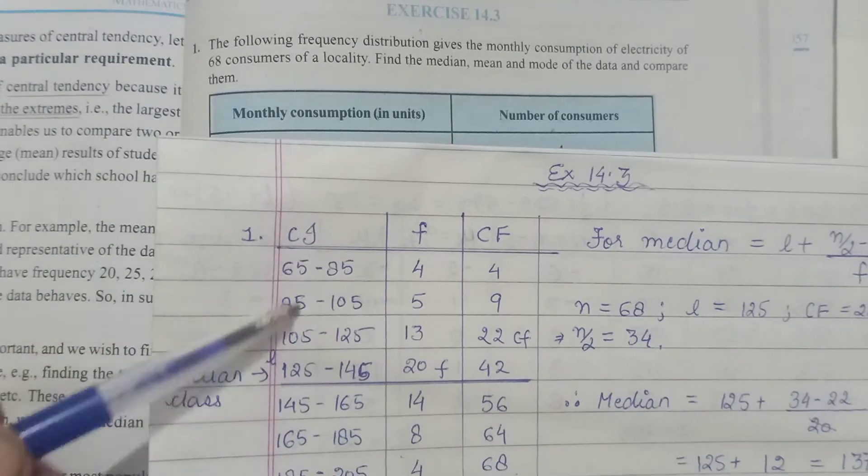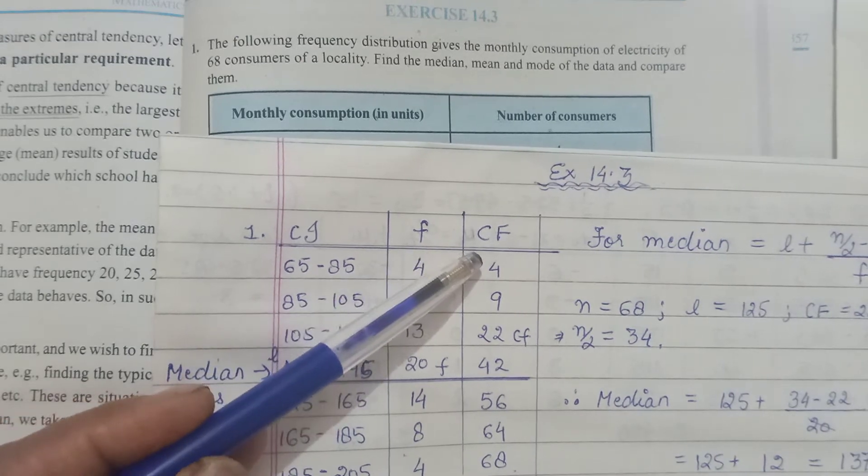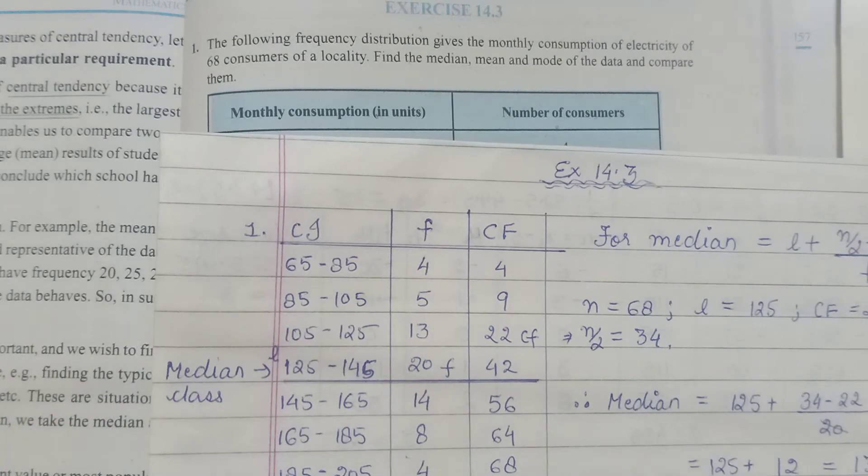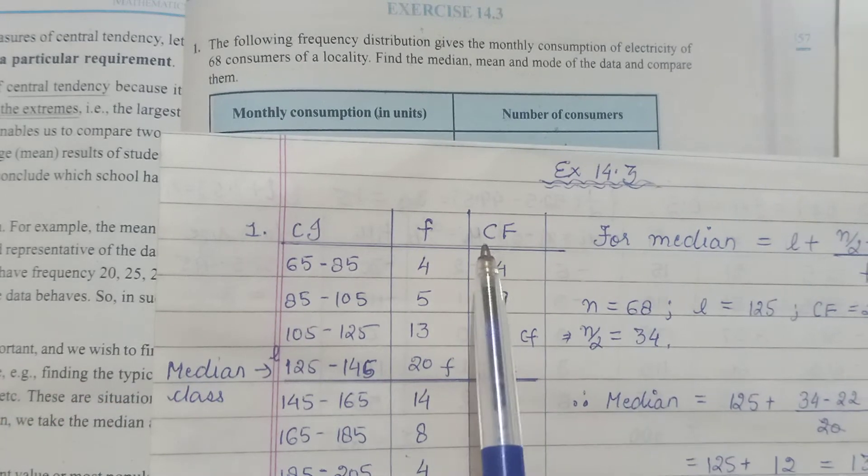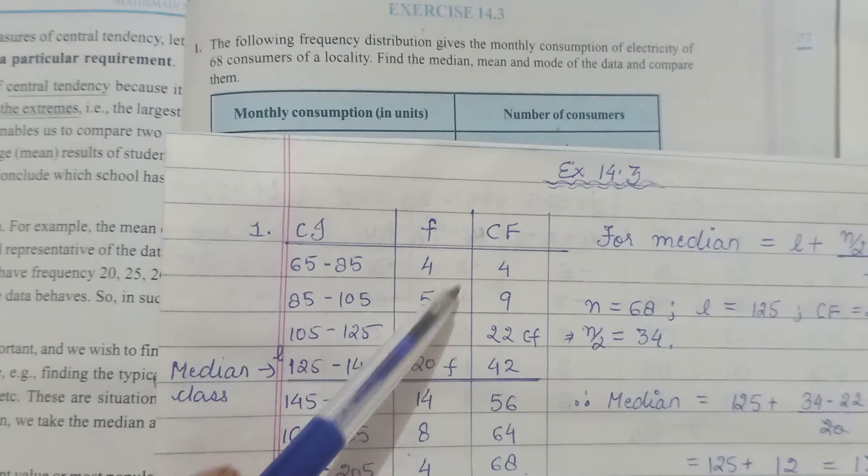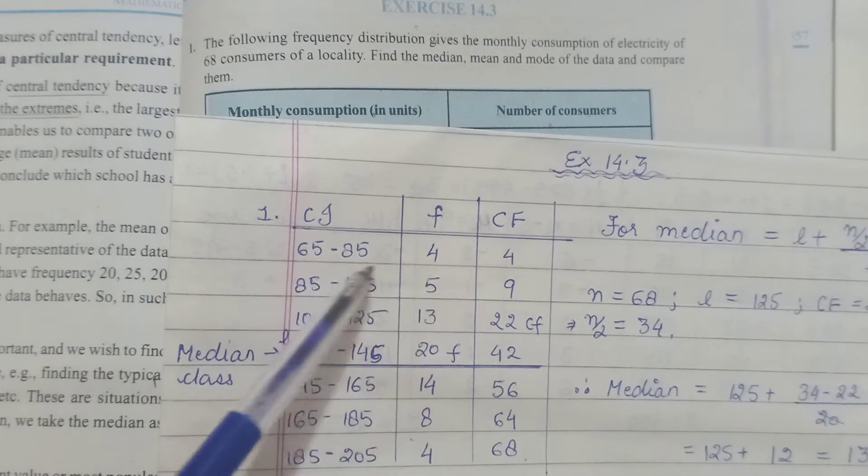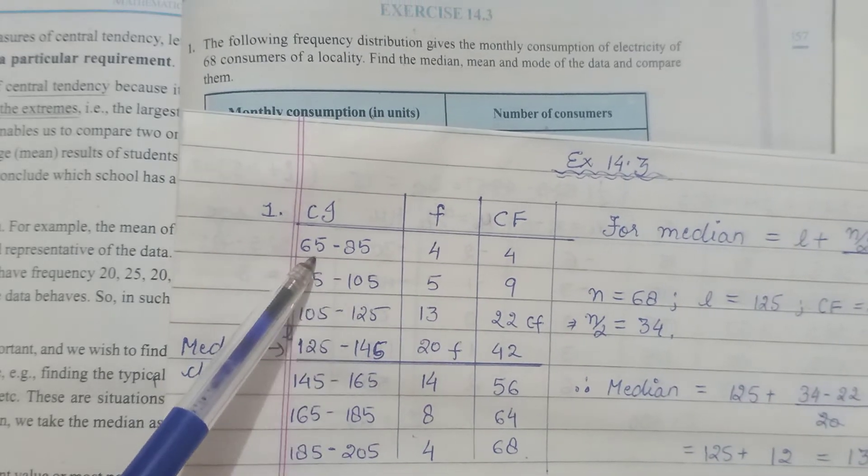Here also, even if it is a grouped distribution, what are we going to do? From frequency we define something as cumulative frequency. Cumulative frequency CF means we are accumulating, collecting all the frequency. Here also then the arrangement is like you will write it as - we would consider, we would say from below 85.